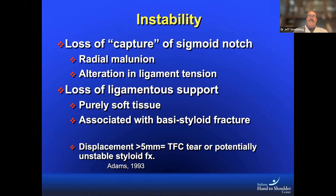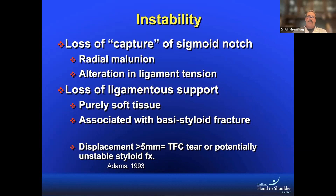When this joint becomes unstable, we basically lose capture of the sigmoid notch. This can occur from an alteration in ligament tension, such as we would see in a TFC tear. It can occur from a radial malunion — I have cases of distal radial instability associated with radius problems, which is a big component of the patients I tend to see. I rarely see patients with acute instability; I see patients coming to me with chronic problems. We know from Brian Adams' work that if you have a distal radius fracture and the styloid is displaced more than five millimeters, that's potentially unstable or there's a TFC tear.